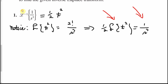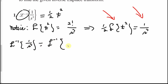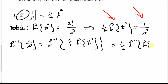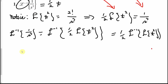Since we're taking the inverse transform of 1/s³, that equals the inverse transform of (1/2)·L{t²}. The factor 1/2 comes out front, giving (1/2)·L⁻¹{L{t²}}. Since the inverse transform and the Laplace transform are inverses of each other, the result is simply (1/2)t².